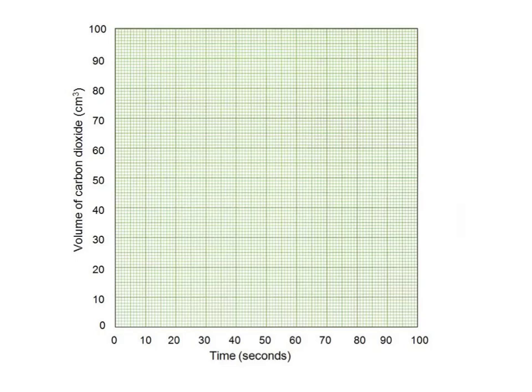In exam questions you'll commonly see a graph with these kind of axes, with time along the bottom and the volume of carbon dioxide up the side. You'd plot your points for the first experiment, labelled at 20 degrees C. When you plot your results for 30 degrees C you'd see a similar graph but it would be steeper, the reaction would finish quicker, but it would make the same volume of gas overall.